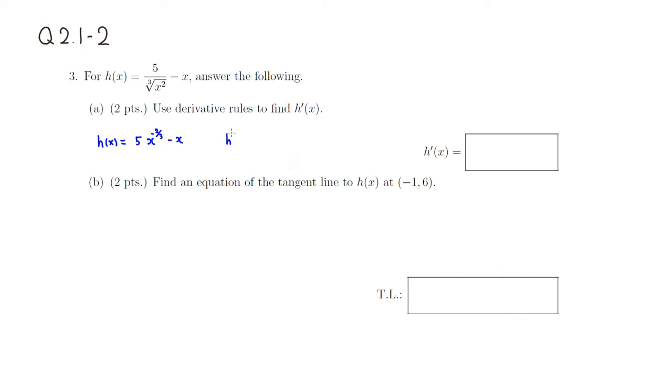So h prime of x is equal to, I'm going to leave 5, so that's a constant multiple, and put the power in front.